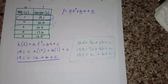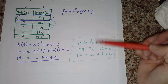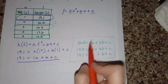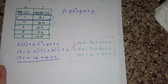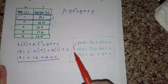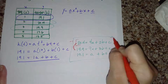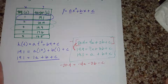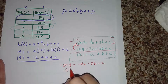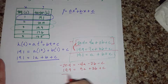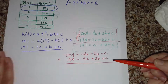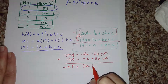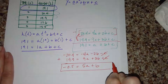To solve the system, I'll use elimination. I take the first two equations and multiply the first by negative one to cancel the c terms. Multiplying equation 2 by negative one gives: negative 20.4 equals negative 4a minus 2b minus c. Adding to equation 3 (19.9 = 9a + 3b + c), the c's cancel, leaving: negative 0.5 equals 5a plus b. I'll hold onto that equation.